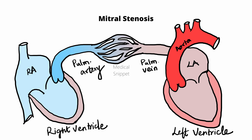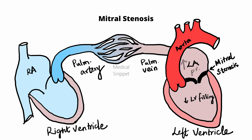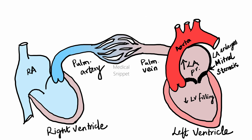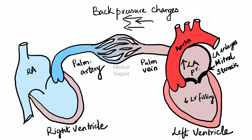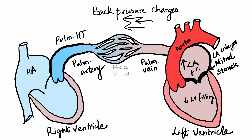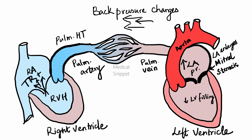In mitral stenosis, there is narrowing of the mitral valve orifice. This causes decreased blood flow into the left ventricle, so the left ventricle is underfilled. Since the blood has to pass through the narrow orifice from the left atrium to the left ventricle, the left atrial pressure increases. The increased left atrial pressure causes enlargement of the left atrium. There are also back pressure changes in the pulmonary vasculature causing pulmonary hypertension. Due to pulmonary hypertension, there is right ventricular hypertrophy and tricuspid regurgitation.